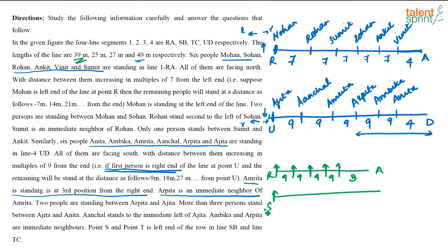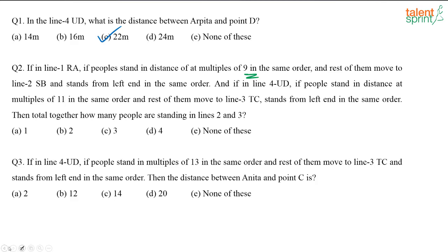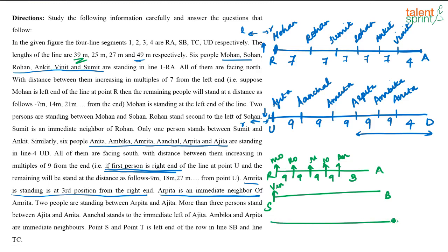Out of the 6 persons, 5 stay in RA — that is Mohan, Rohan, Sumit, Sohan, and Ankit — and Vineet moves to line SB. Similarly, in line UD, people now stand at distances which are multiples of 11. The length of UD is 49 meters: 11×4 = 44, so 5 meters remain. So only 5 people can stand in UD, and one person must move to line TC from the left end, which is point T.